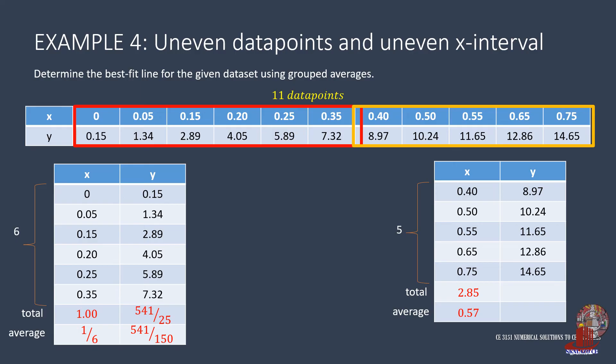The summation of Y is from 8.97 plus 10.24 plus 11.65 plus 12.86 and 14.65, which is equal to 58.37. The average is then 58.37 divided by 5, which is 11.674.